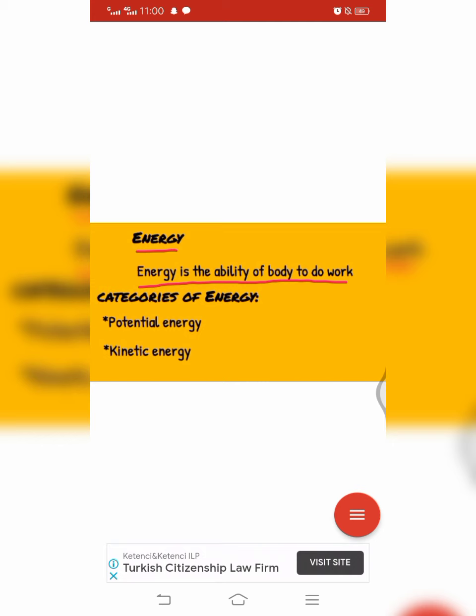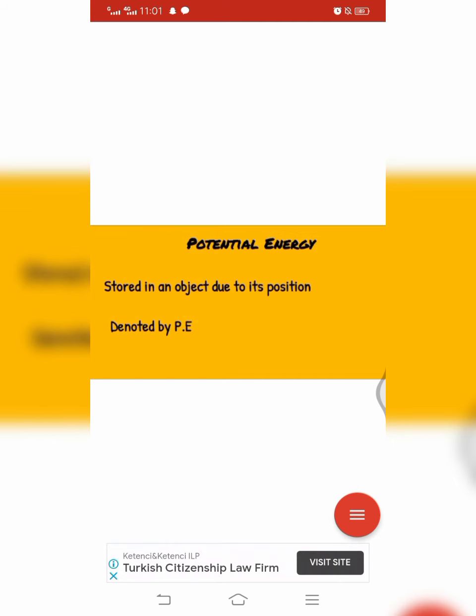There are two categories of energy. The first one is potential energy and the second one is kinetic energy. Now we will discuss about these categories of energy one by one. The first category of energy is potential energy.